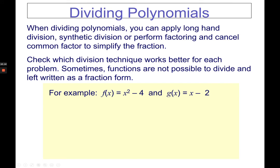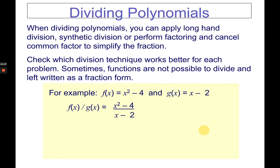For example, f of x equals x squared minus 4 and g of x equals x minus 2. If asked to divide f of x by g of x, write x squared minus 4 on top of the fraction and x minus 2 underneath. If it's not possible to divide, that fraction is your final answer. But here it is possible — we'll use the factoring technique since x squared minus 4 can be factored.